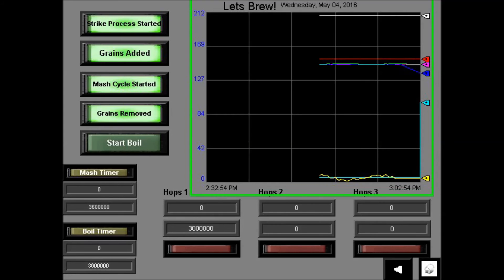When the boil timer is started, so is the hop timers. The hop timers let you know, with the indicator lights, when to add additions.